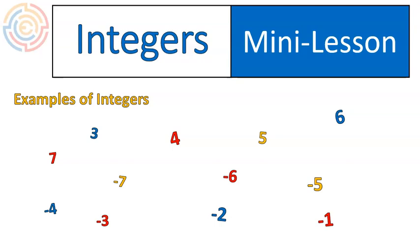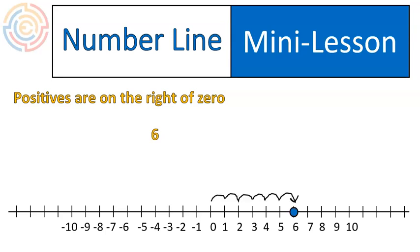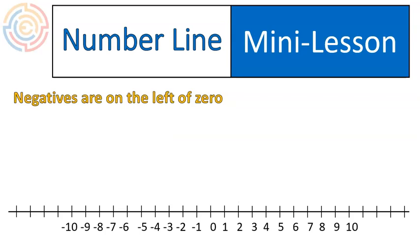Integers are positive and negative numbers, like the examples you see here. This is a number line, which we're going to be using as a tool throughout this lesson. If you start at the point zero, numbers on the right of zero are positive. So six, for example, would be located here, and it's on the right of zero. Negative numbers are on the left of zero, so the number negative six would be located over here.